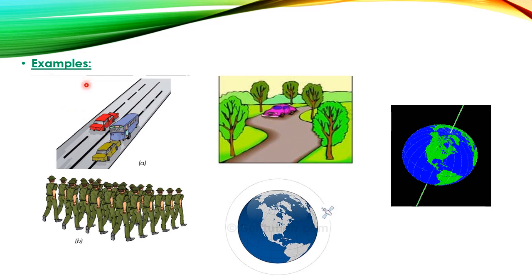Let us take some examples on the types of motion. In the first example, two cars and a bus are moving on a straight road. The trajectory is a straight line, so this is rectilinear translational motion. In the second picture, soldiers are marching on straight lines — also rectilinear translational motion. In the third figure, a car is moving on a curved road, so the motion of the car is curvilinear translational motion.